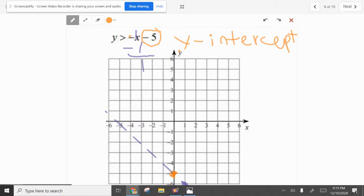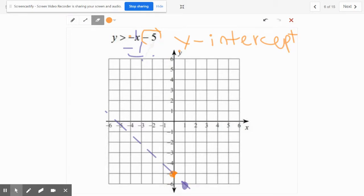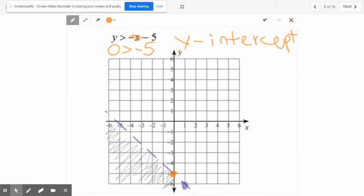And then after all that, I'm going to take my eraser. After all that, plug in zero, zero and see if it works. Zero here, and then this cancels out because it's zero. Negative five. Is zero greater than negative five? Nope. So you don't shade over zero, zero. All right, we went over this one in class.